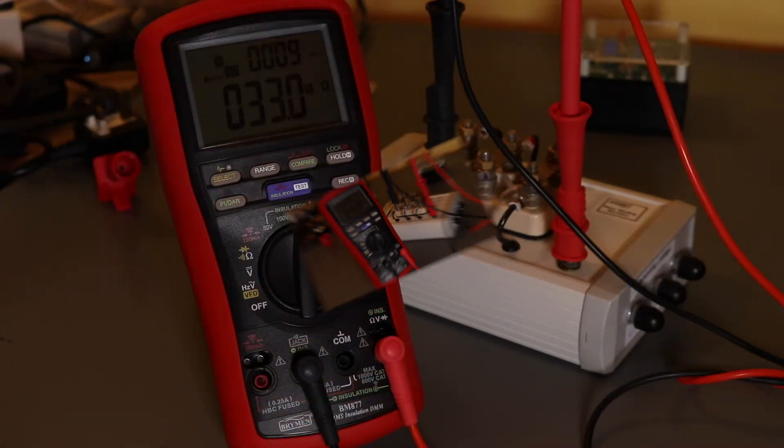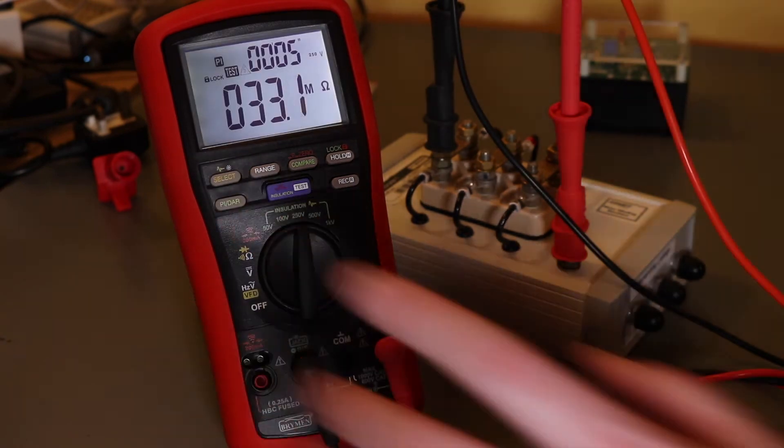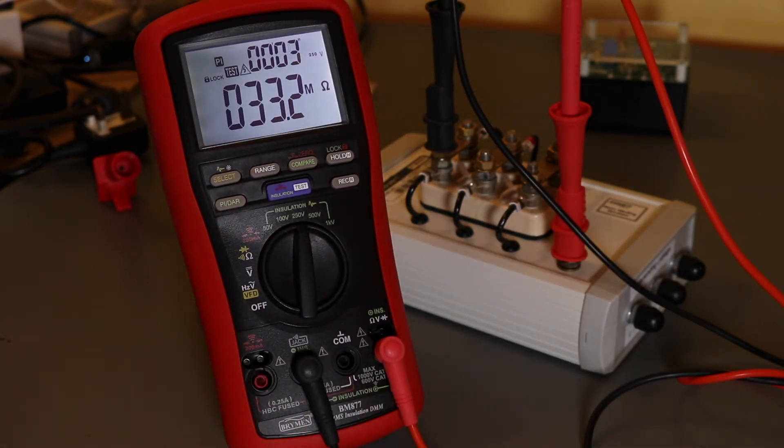We'll need to remember that value. OK, we're coming up to the end of the Pi test. Now this Pi on this should be around about 7.62. But as you can see, it's only showing 5 on this meter.